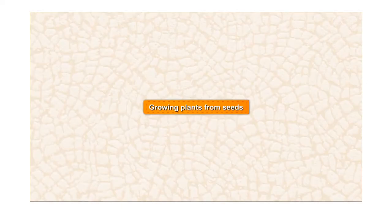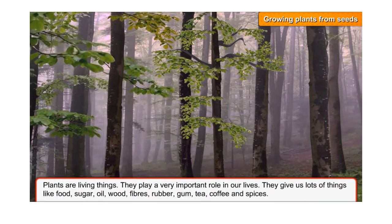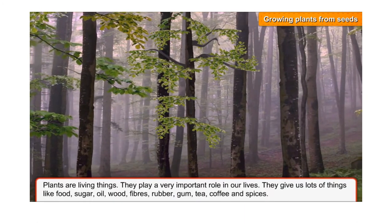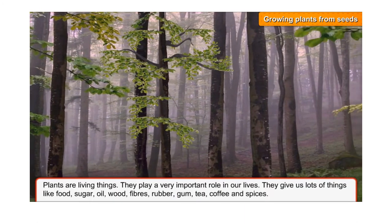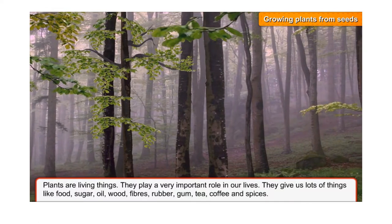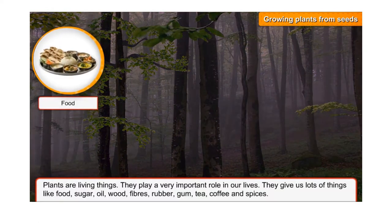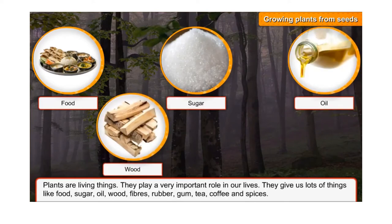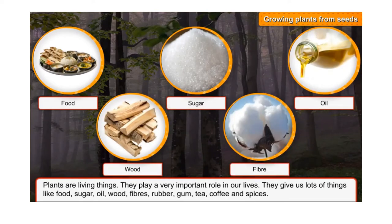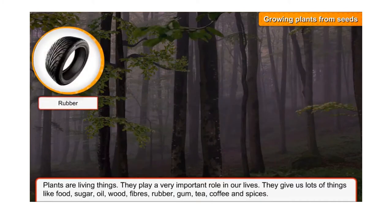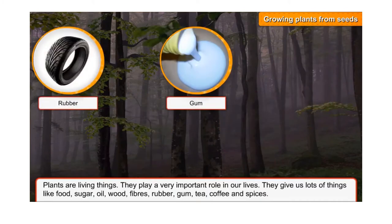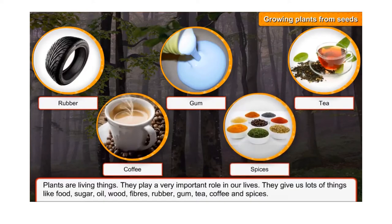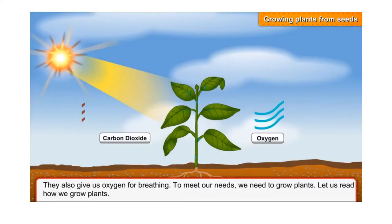Growing plants from seeds. Plants are living things that play a very important role in our lives. They give us lots of things like food, sugar, oil, wood, fibers, rubber, gum, tea, coffee, and spices. They also give us oxygen for breathing.